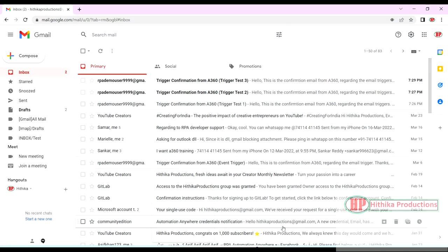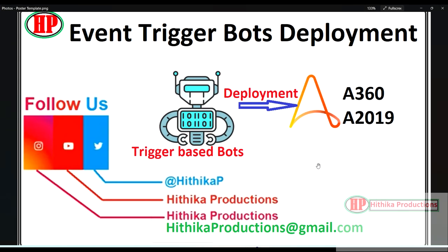So this is how we can implement email triggers and deploy them into unattended mode via the Control Room. Thanks for watching — I hope this video helps you implement email-based triggers through unattended bot deployment mode. If you like the video please like, share, and subscribe so you get notifications whenever I upload new videos. See you in the next video — thank you, bye-bye.